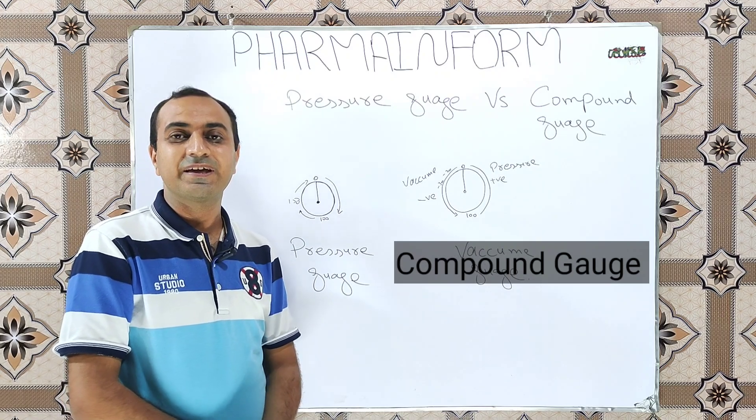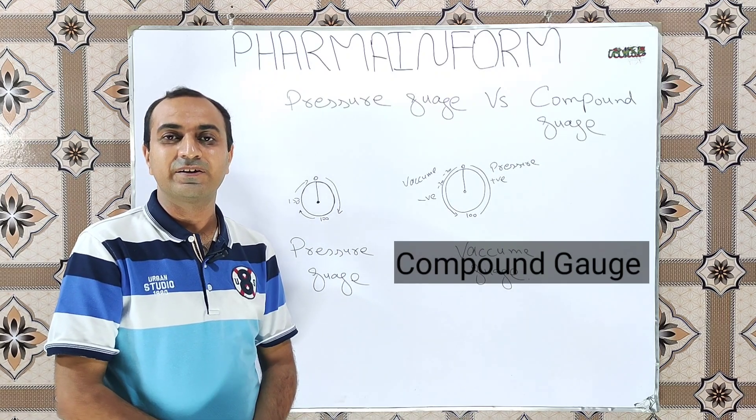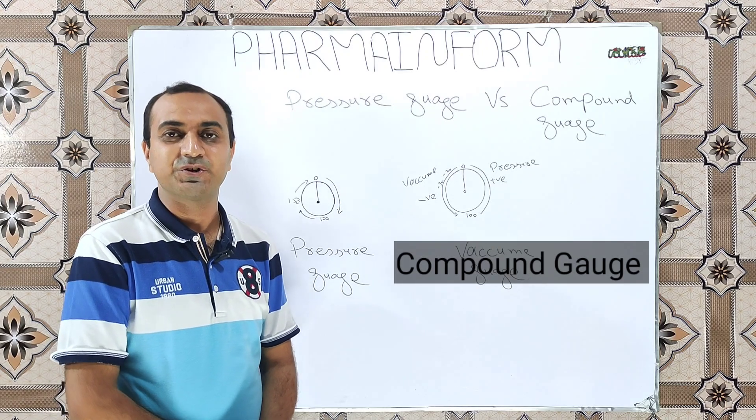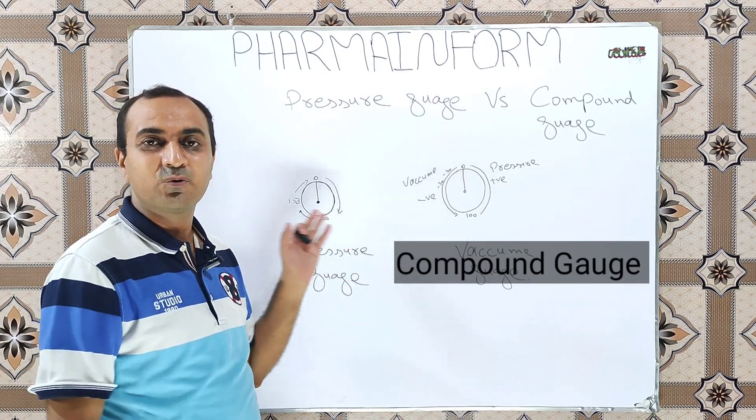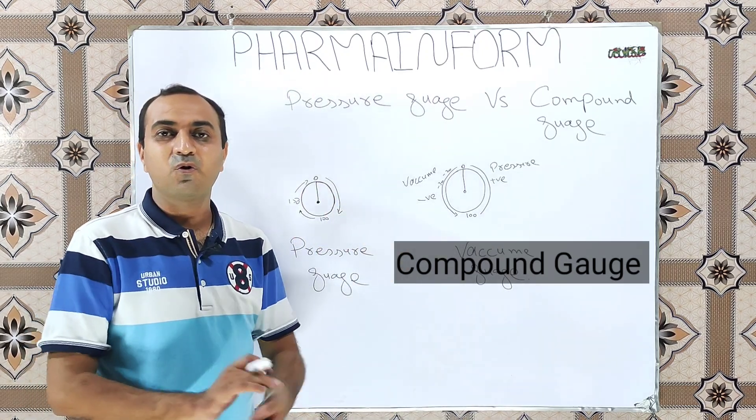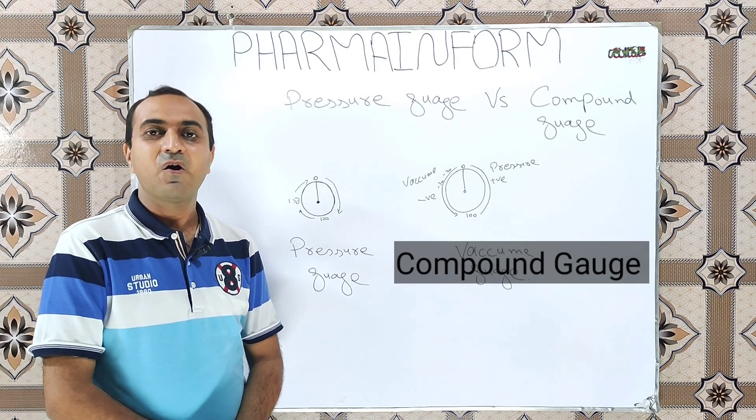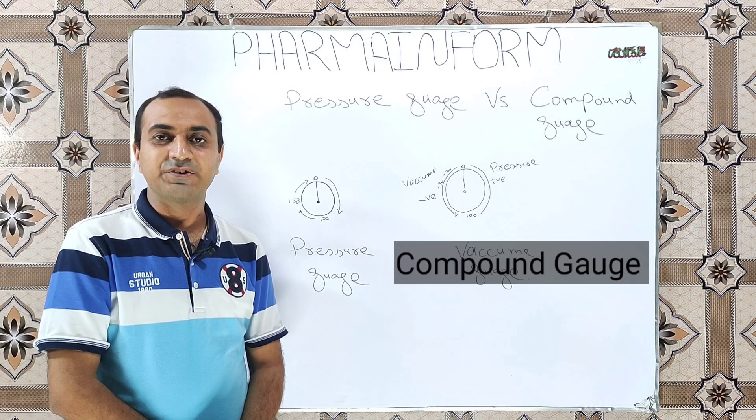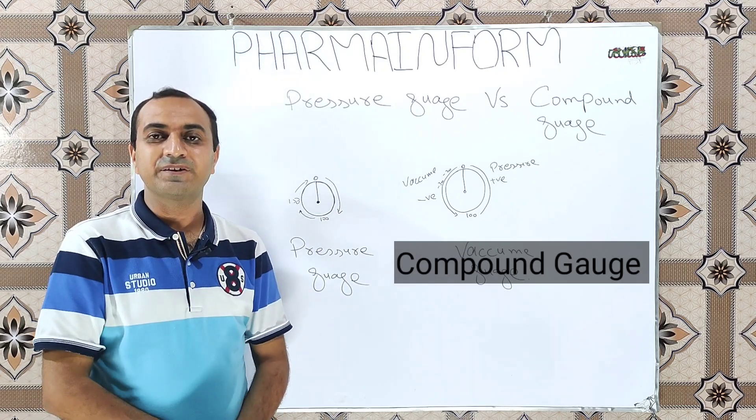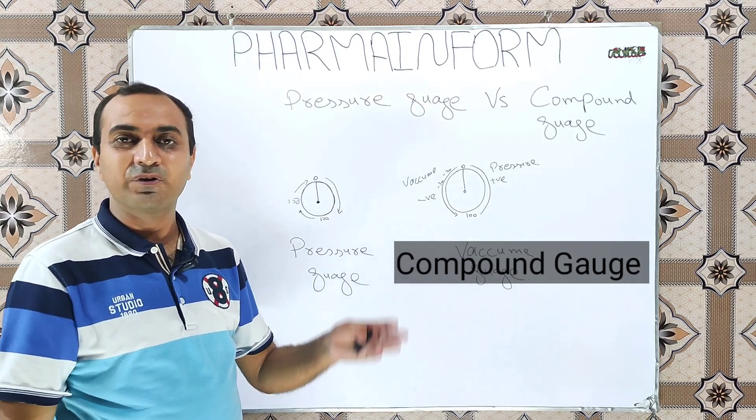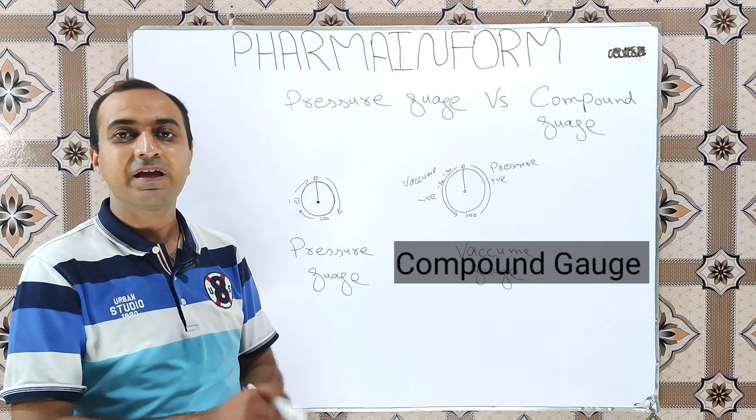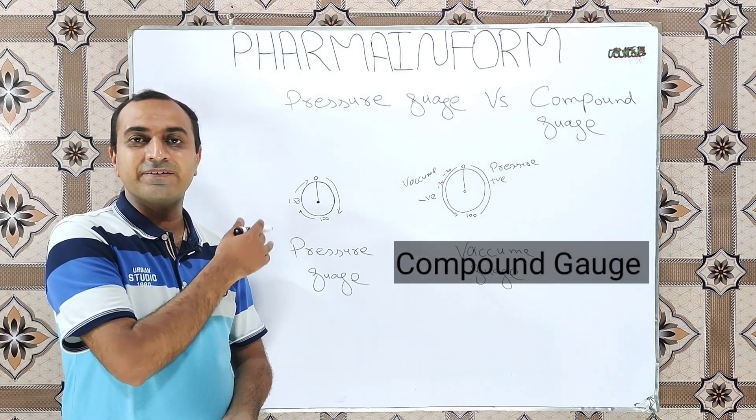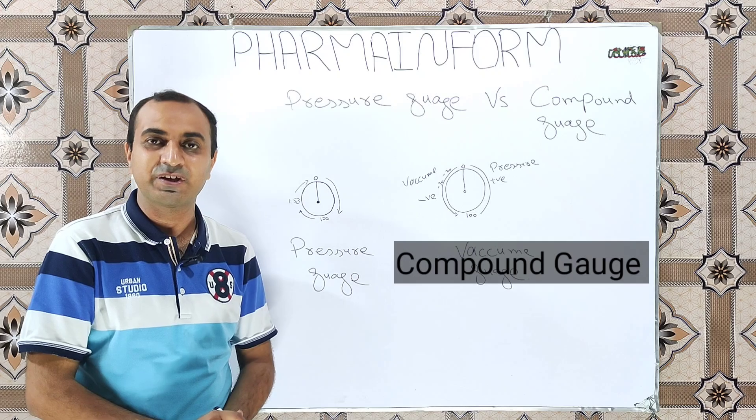Pressure gauge. Pressure gauge is used in pharmaceutical industries to display the value of the pressure, meaning if we only want to display the value of the pressure, meaning pressure of the water or air pressure, we use the pressure gauges. The example of pressure gauges is the gauge installed on the system of compressed air. Where we have the compressed air system, we have a gauge and this gauge is known as pressure gauge.